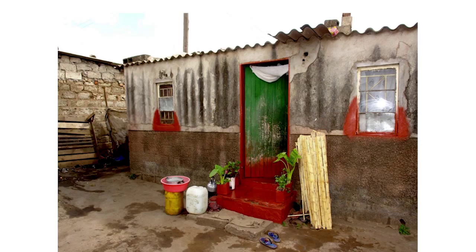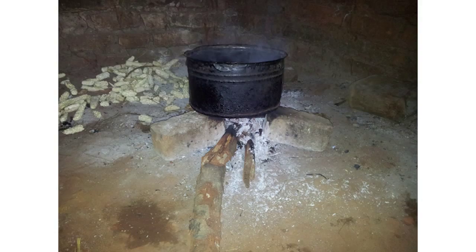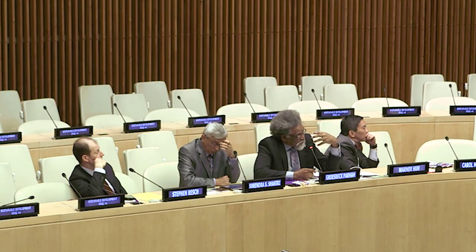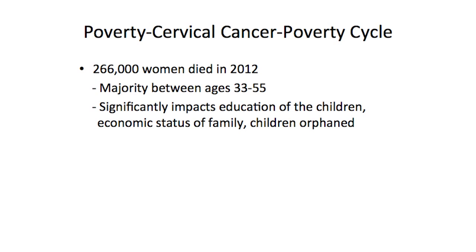This is a common peri-urban dwelling in Zambia, and less than that in many other countries. This is a common kitchen in those environments, just to show some of the living conditions. A woman making a significant contribution to the welfare of her children — paying for school fees, buying food, cooking — is carrying a heavy economic load. And then she develops cervical cancer, and the whole family becomes shattered because that income and care she was giving is now gone. Over 250,000 women died in 2012 from cervical cancer; about 85% were in low- and middle-income countries, the majority between ages 33 and 55. It significantly impacts the education of children, the economic status of the family, and whether children are orphaned.